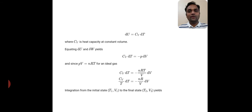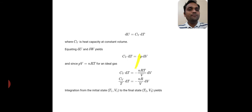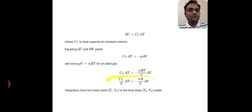We know that PV = NRT, therefore substituting P = NRT/V gives CᵥdT = −NRT/V · dV. Bringing T to the left side gives Cᵥ/T · dT = −NR/V · dV. This is our expression: Cᵥ/T dT = −NR/V dV. We integrate this equation from initial state T₁, V₁ to final state T₂, V₂.